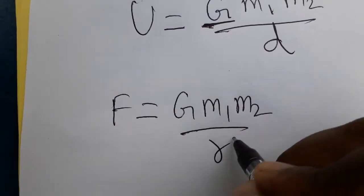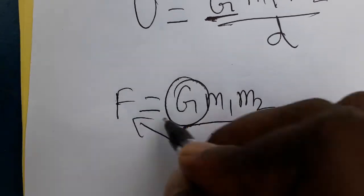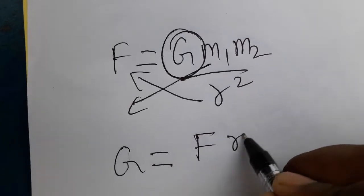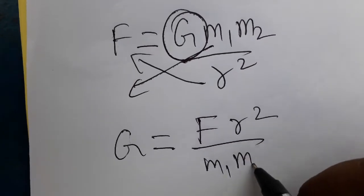We are finding G as the subject. Bringing r squared m₁m₂ as denominator, G equals F times r squared divided by m₁ into m₂. That means it's newton meter squared. Force SI unit is newton, distance SI unit is meter squared, mass SI unit is kg squared.